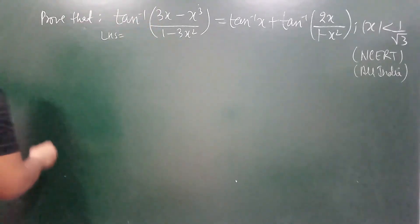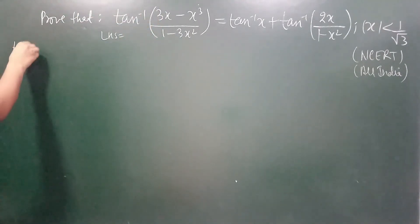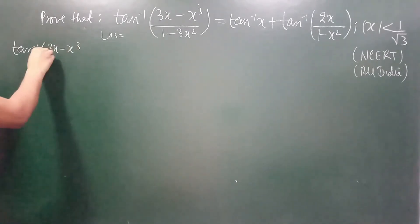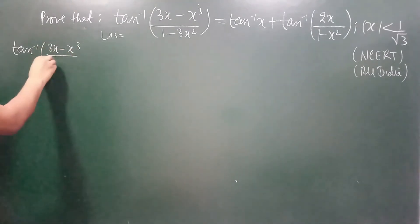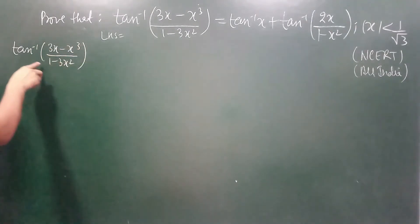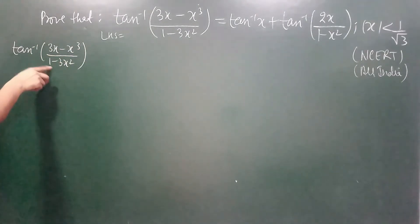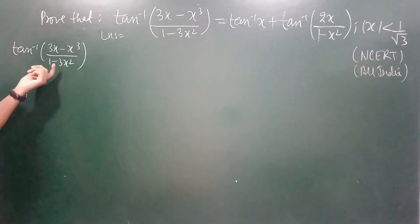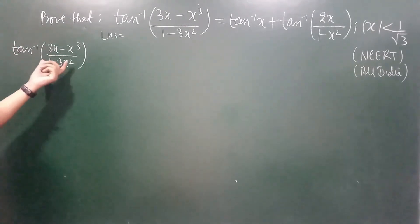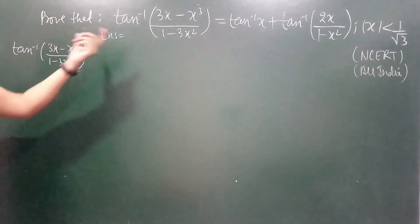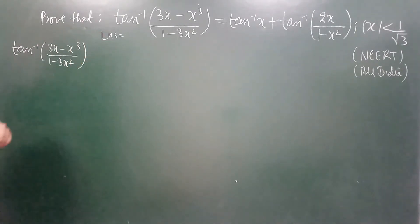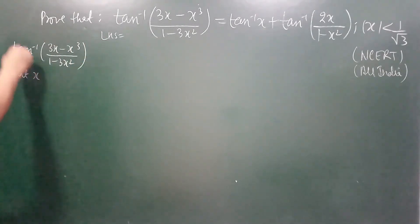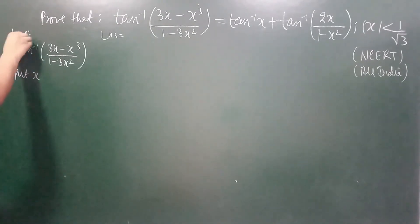Our LHS is tan inverse of (3x minus x cube) upon (1 minus 3x square). We have learned that if we put x equal to tan theta here, we will get tan 3 theta, and we can simplify our expression easily. So let's put x equal to tan theta in the LHS.